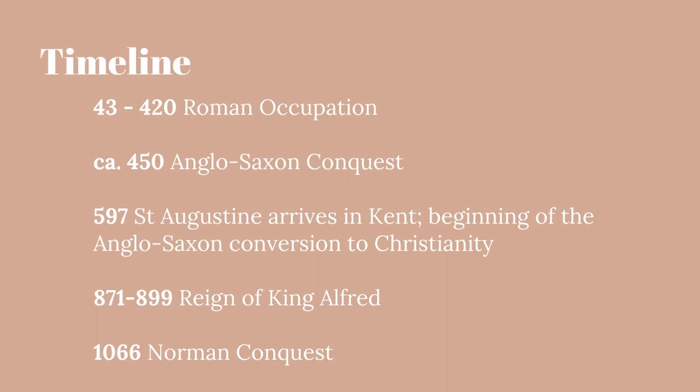Let's begin with a timeline of the major events of this period. From about 43 AD to 420 AD you have the Roman invasion and occupation of Britain. By 450 you have the Anglo-Saxon conquest. In 597 St. Augustine arrives in Kent, marking the beginning of the Anglo-Saxon conversion to Christianity.